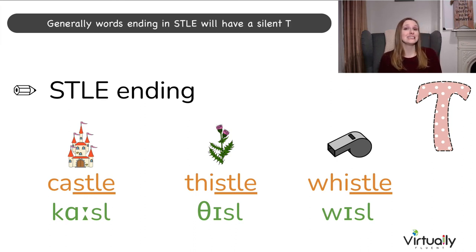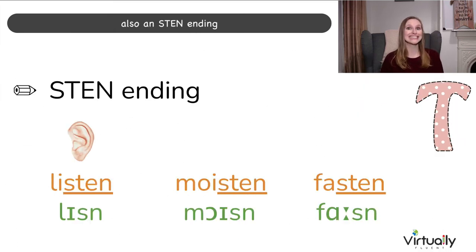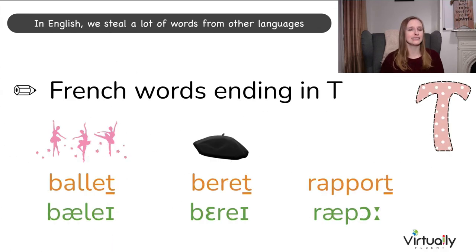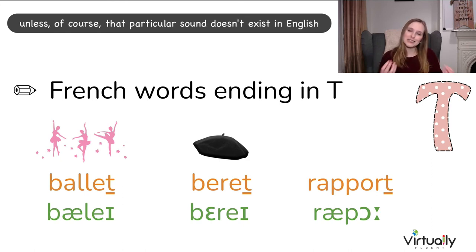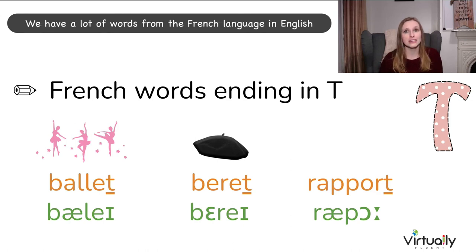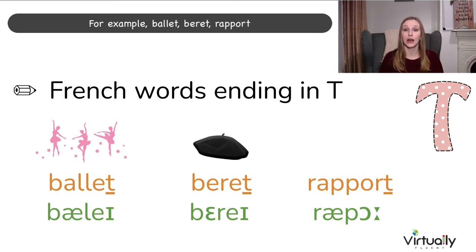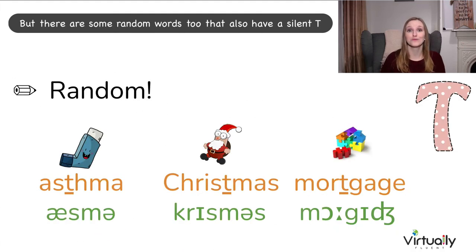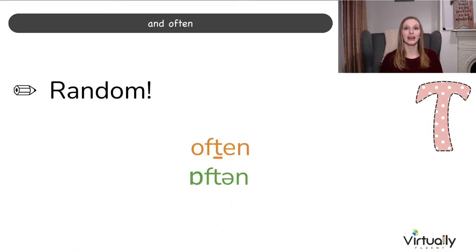We're up to the letter T. Generally, words ending in STLE will have a silent T — for example: castle, thistle, and whistle. Also an STEN ending: listen, moisten, fasten. In English, we borrow a lot of words from other languages. We have many words from French, and a lot of French words end in T. When we've brought them into English, we don't pronounce the T — for example: ballet, beret, rapport. There are also random words with a silent T: most commonly asthma, Christmas, mortgage, and often.